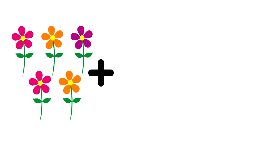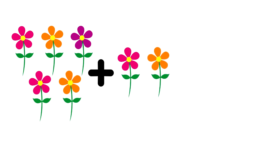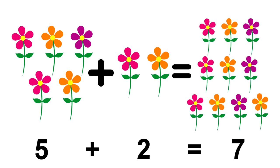There are five flowers and there are two more flowers. So how many flowers are there? Count. Yes, seven flowers.